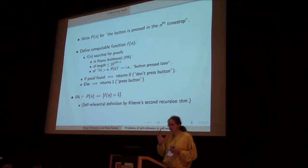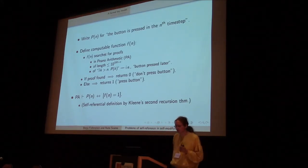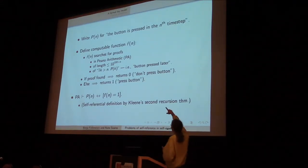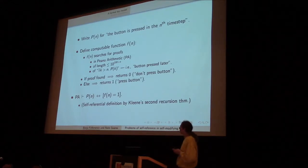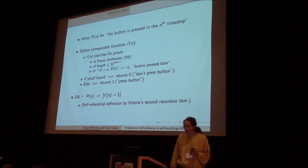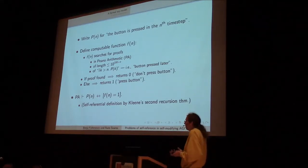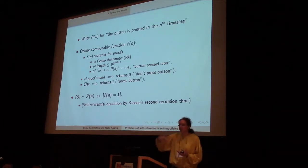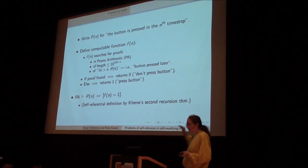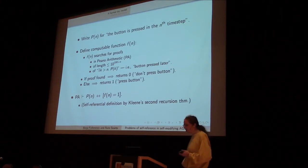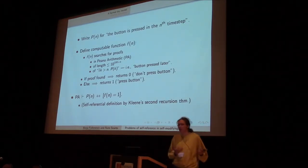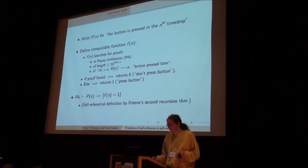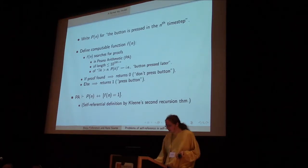And if so, then it decides not to press the button in the nth time step. So f returns 0 if a proof of this form is found. If a proof is found that the button gets pressed later, it returns 0 to signify that it's not pressed in that round. And if it doesn't find a proof like this, then it returns 1, which we interpret as the button is pressed in the nth time step. And this P(n), the button is pressed in the nth time step, is then simply defined as saying that f returns 1, which means that f has this self-referential definition, because it refers to P(n), which again refers to f. But you can do that by Kleene's second recursion theorem, which means that a computable function can basically refer to its own source code. I don't have time to go into the details, but it's a standard trick.